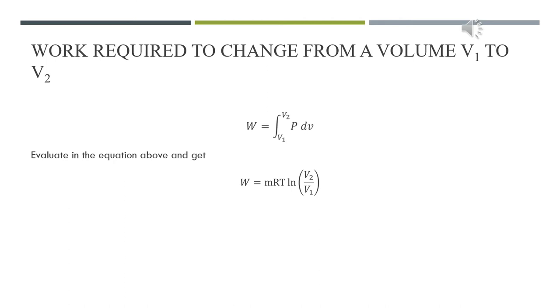Work required to change from volume V1 to V2 can be expressed as integrate the pressure P with derivative of V. Pressure equals MRT divided by V. MRT are constant and brought outward and integrate 1 over V. The equation after integration equals MRT times logarithm base E of V2 divided by V1.